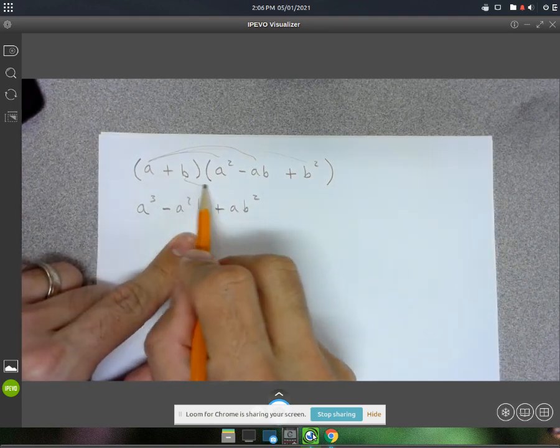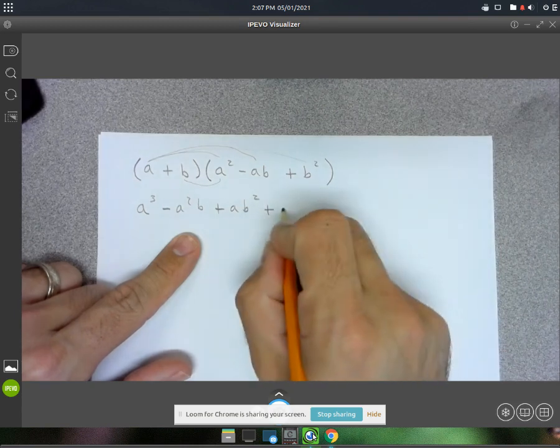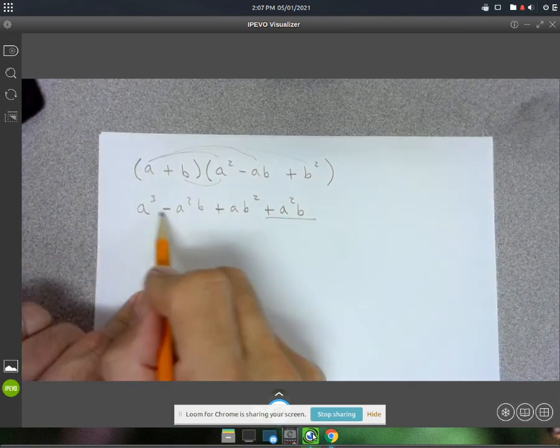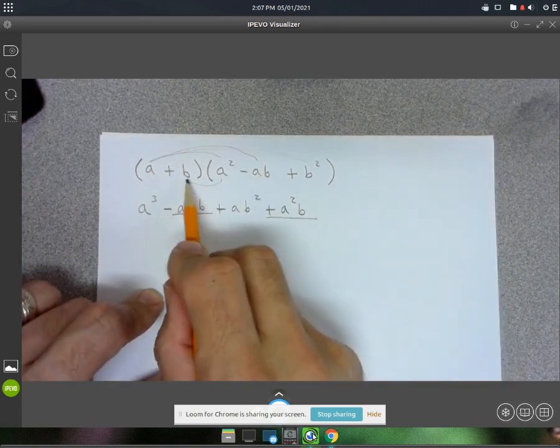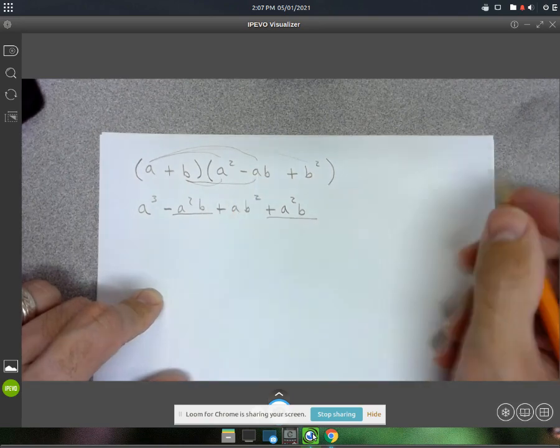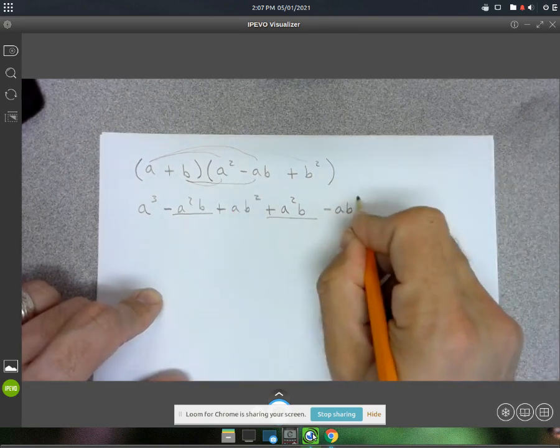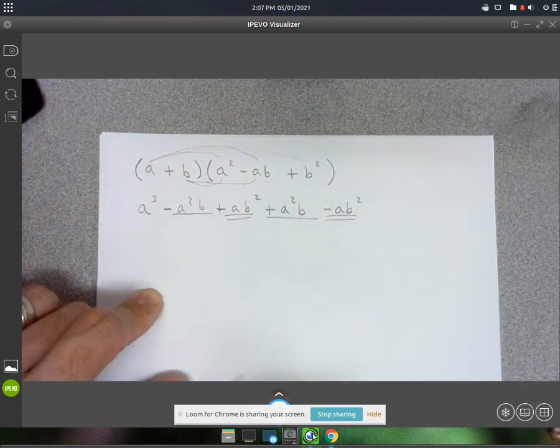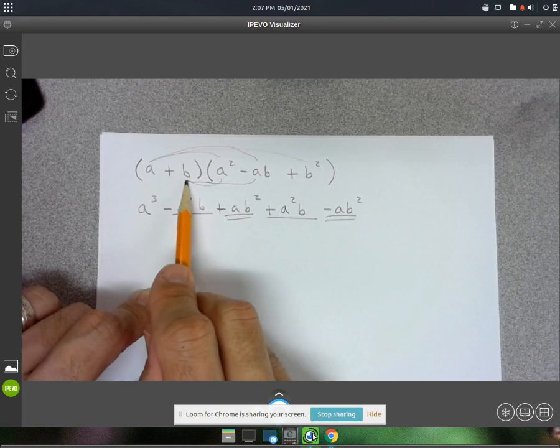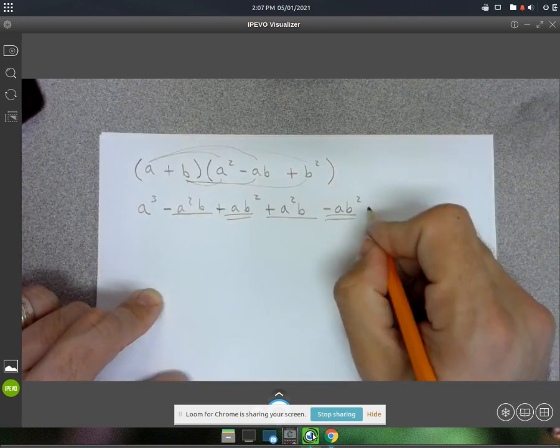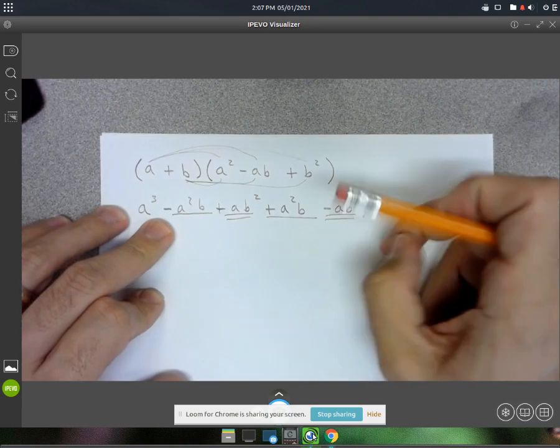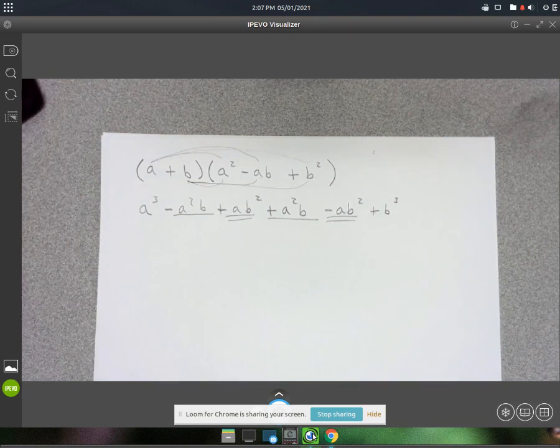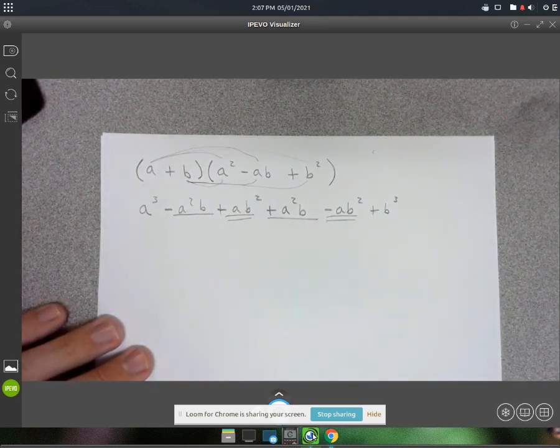Then b times a² gives positive a²b. That one and that one are going to cancel out. Then b times -ab gives negative ab². Those cancel out too. And the last one is b times b², which gives positive b³. All the middle terms end up canceling, which is wonderful.